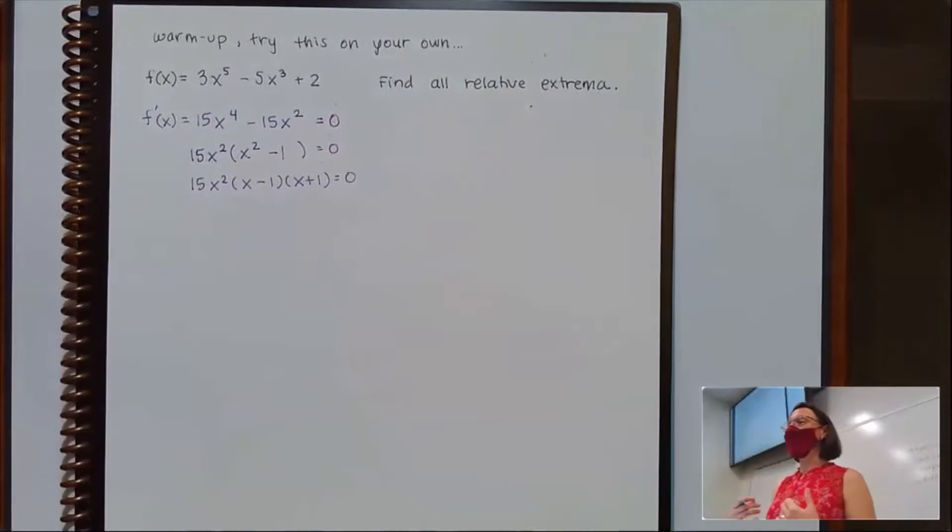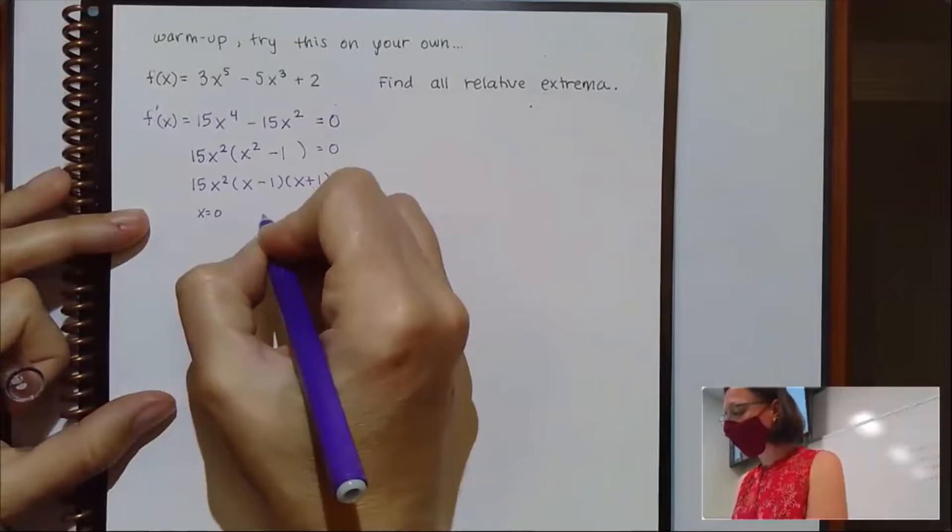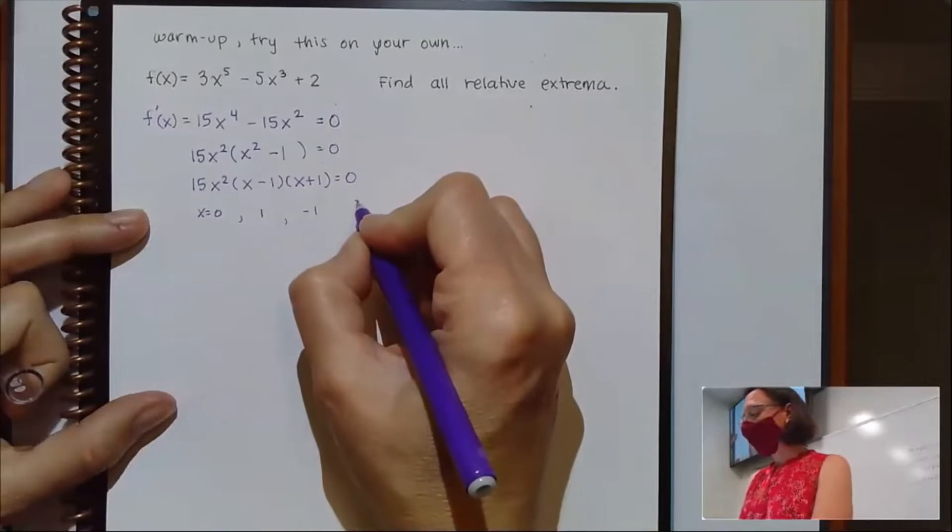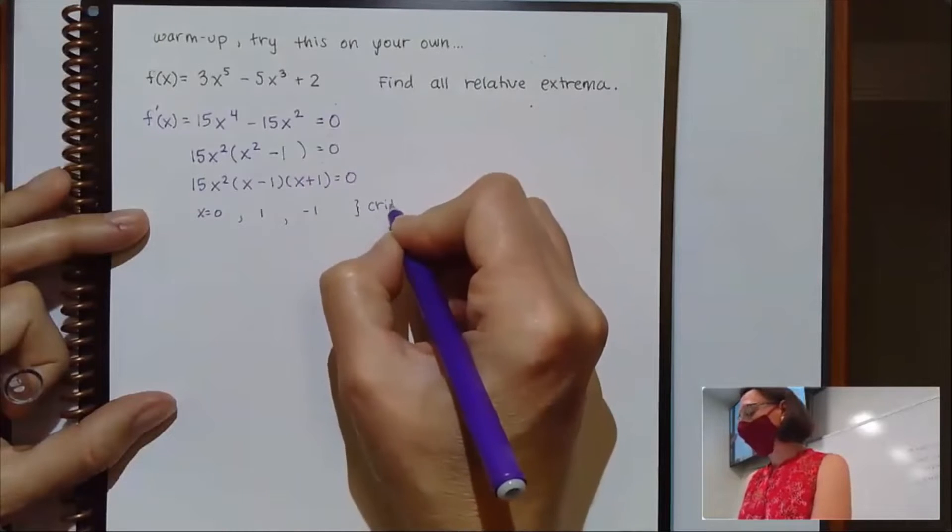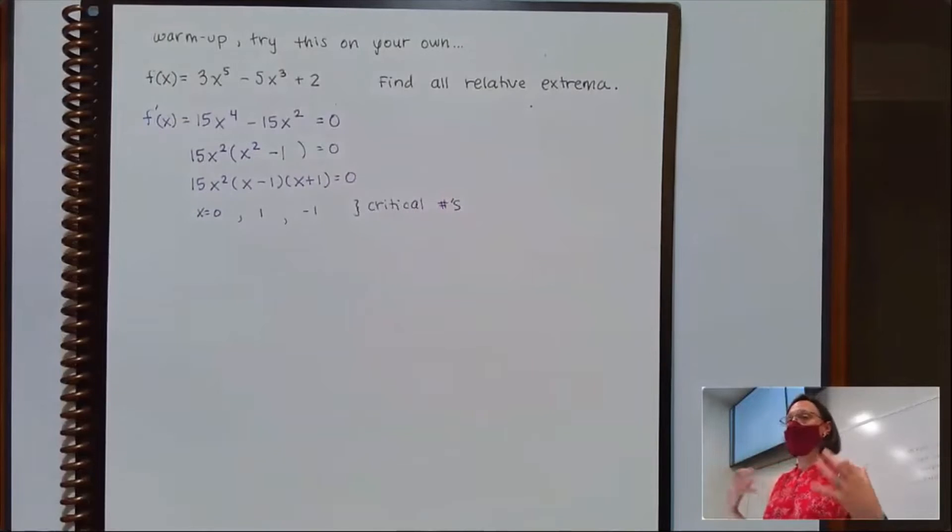I do a number line. Some people do a chart. It doesn't really matter, but somehow you want to organize your thoughts here. So the values that make my derivative equal to 0 are 0, 1, and negative 1. So these are all critical numbers. I'm careful to call them critical numbers and not critical points.